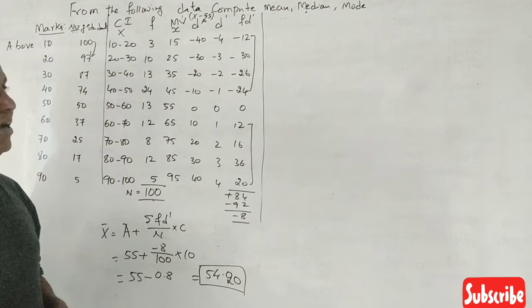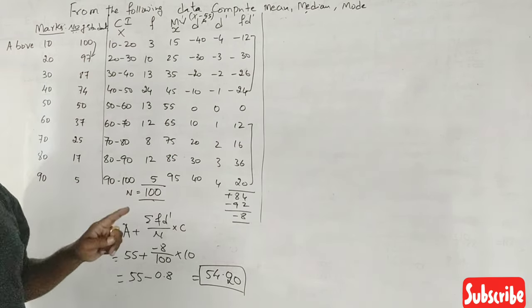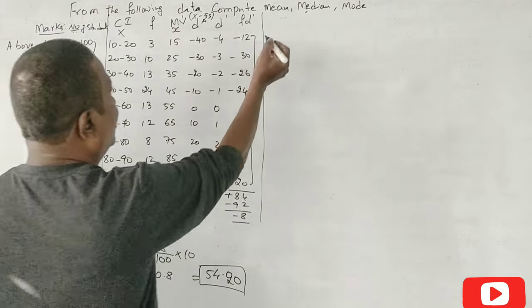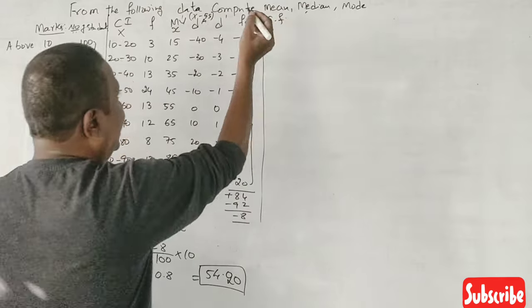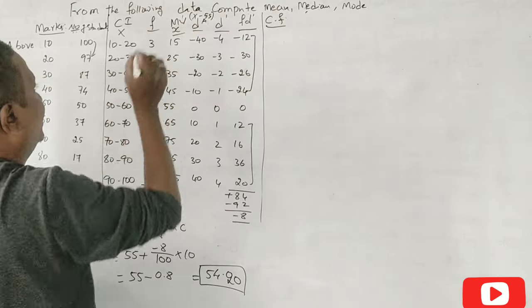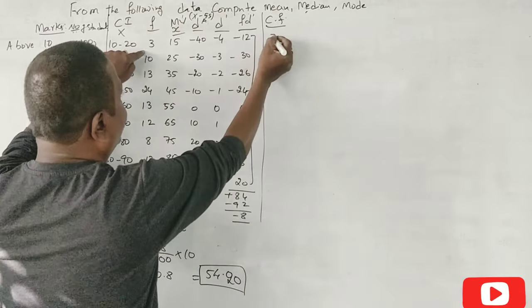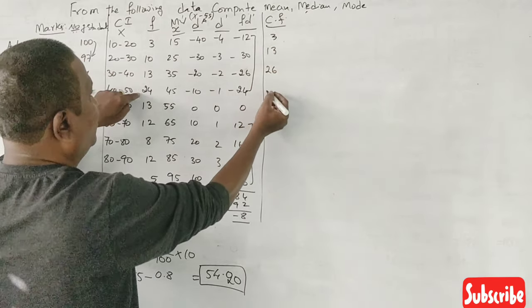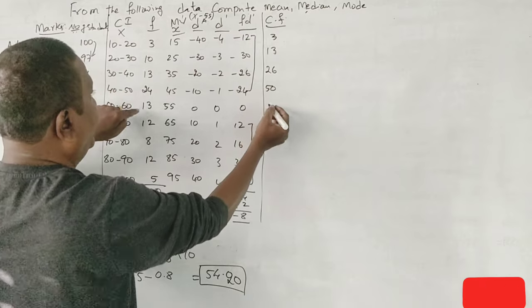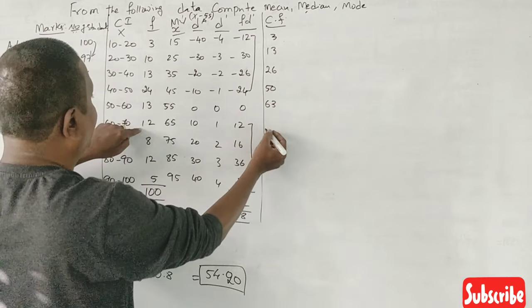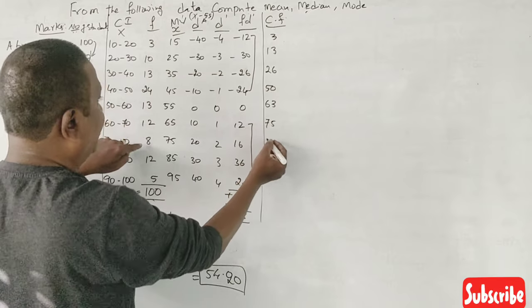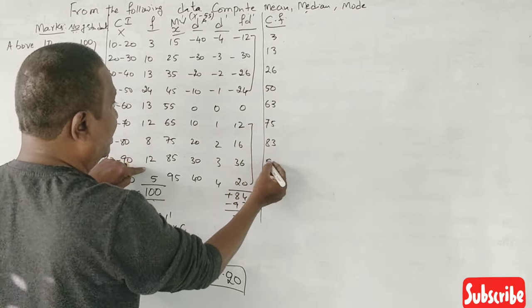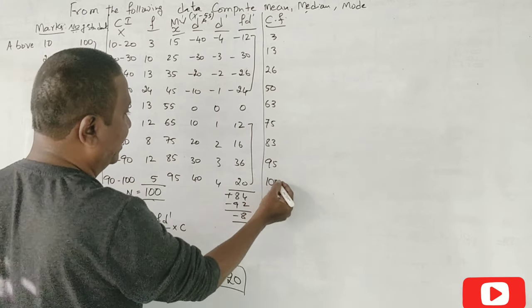Here is the median mark. Median mark. The first frequency is cumulative mark. This is cumulative frequency. It is very important. Here is the 3. 3 plus 10 is 13. 13 plus 13 is 26. 26 plus 24 is 50. 50 plus 13 is 63. 63 plus 12 is 75. 75 plus 8 is 83. 83 plus 12 is 95. 95 plus 5 is 100. Correct?